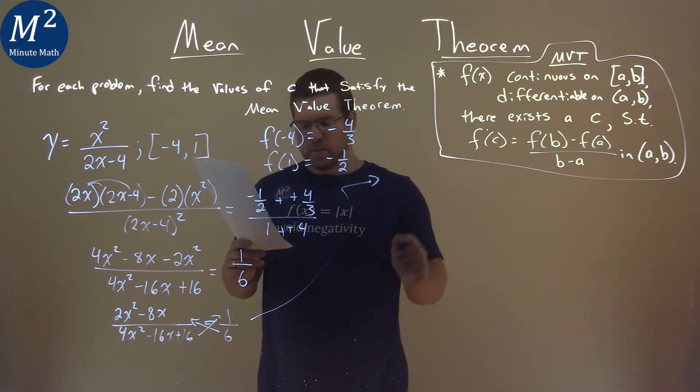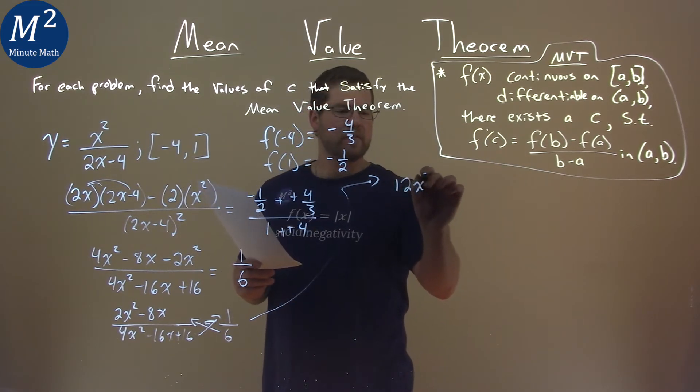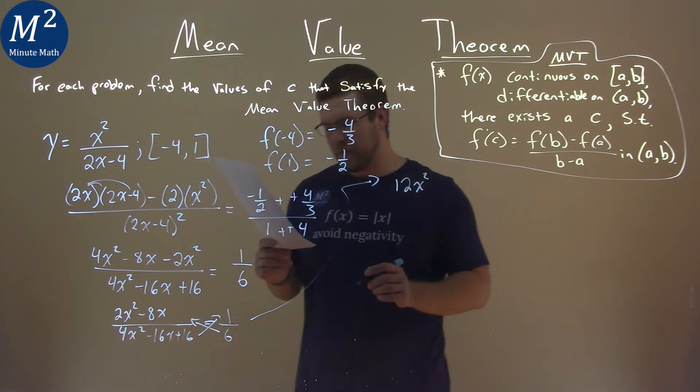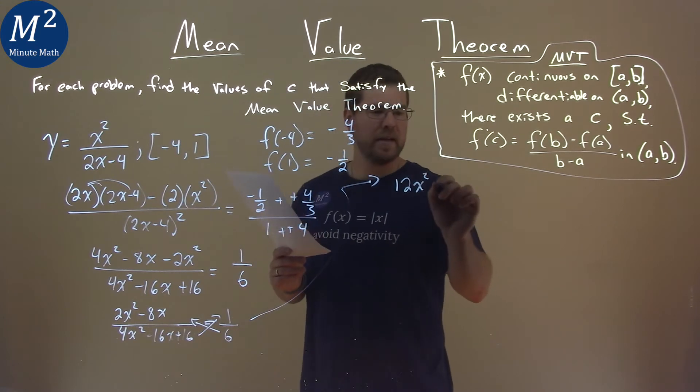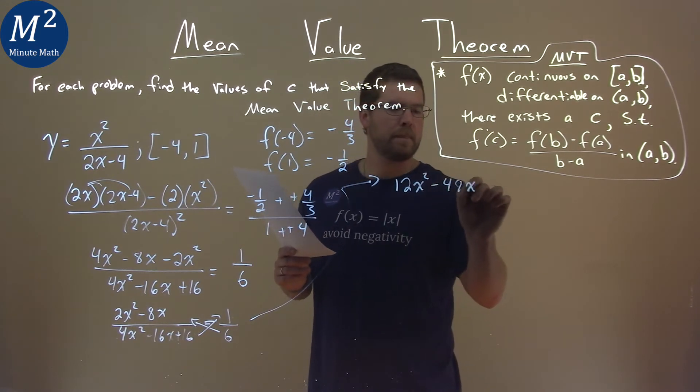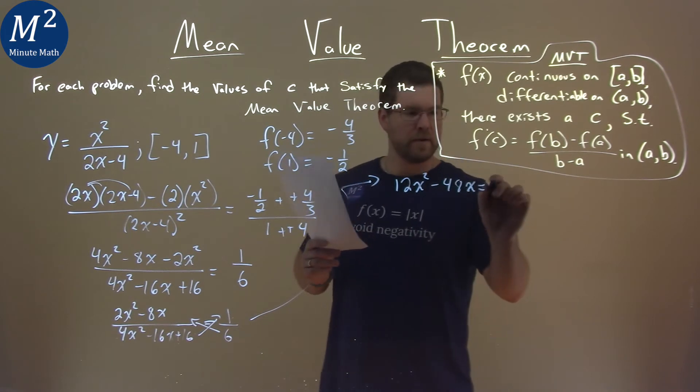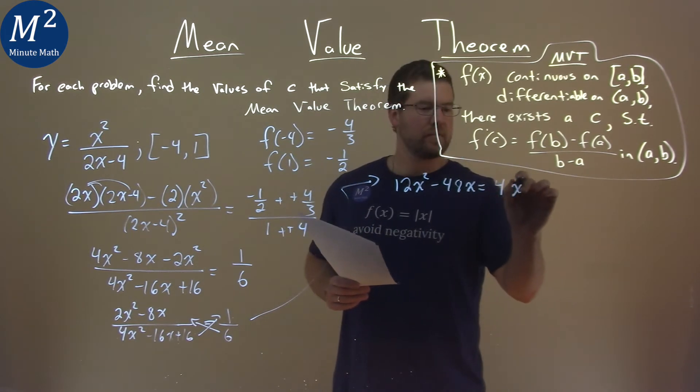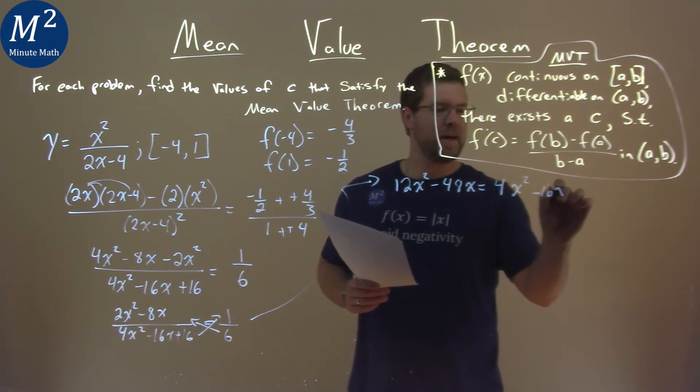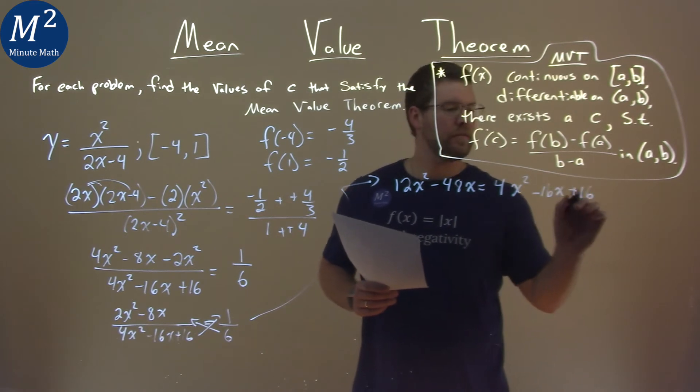So, 6 times the 2x squared is 12x squared, and then 6 times the minus 8x is minus 48x. That is equal to, let's rewrite basically the denominator, 4x squared minus 16x plus 16.